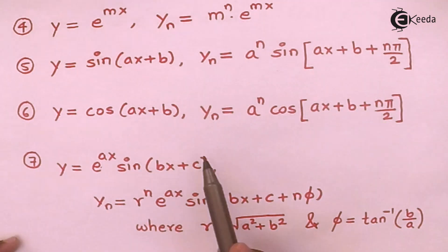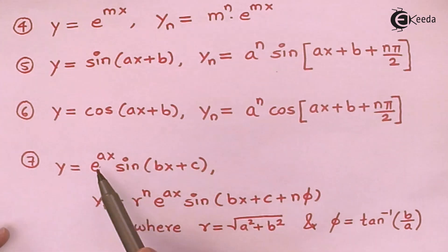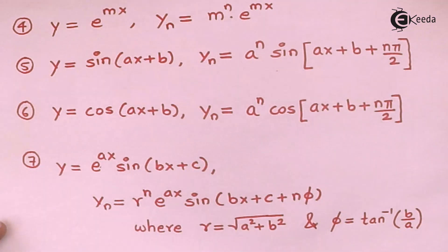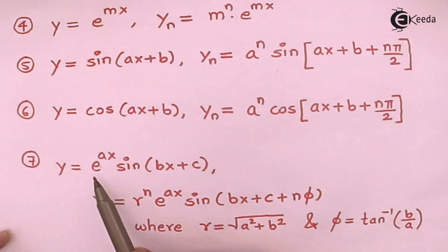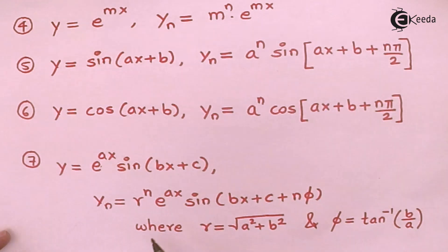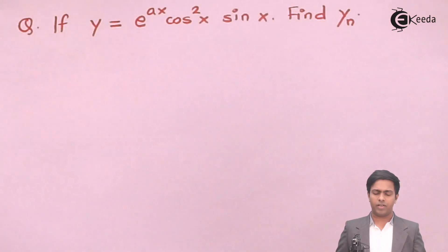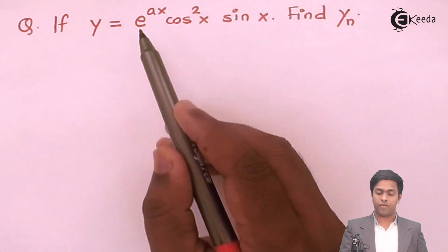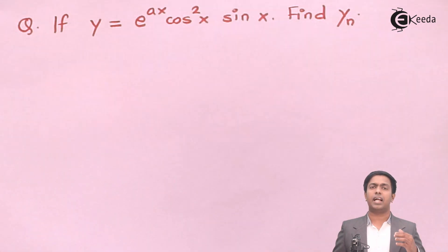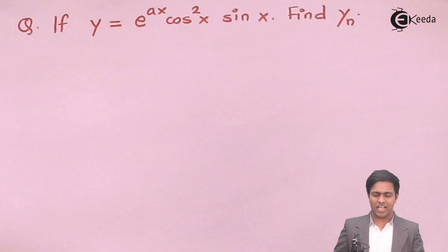To use this formula we need one exponential term and one trigonometric term. We also have a companion formula for e^(ax) cos, which gives cos in the answer. However, our function has e^(ax) with cos²x · sin x, so we cannot apply the formula directly and must first convert the function into the required form.